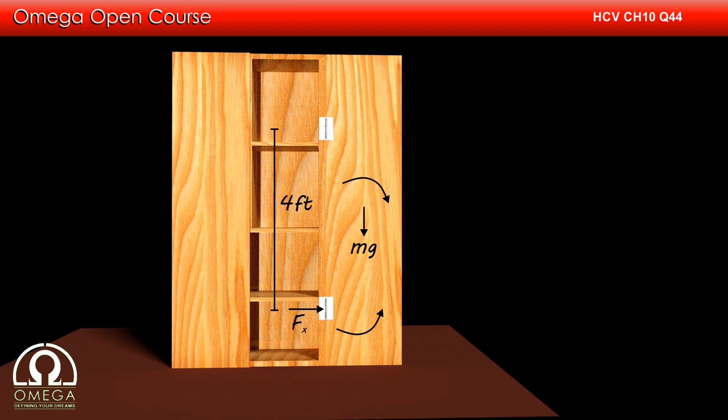Let the magnitude of this force be Fx. Since net force on the door in horizontal direction is zero, the horizontal component of the force at the upper hinge must be equal in magnitude and opposite in direction to this force.